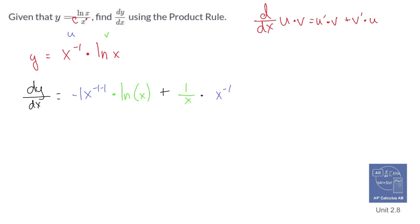Now there's lots to clean up here, so that's what I'm going to do right now. dy/dx is going to equal negative x to the negative two multiplied to ln of x.